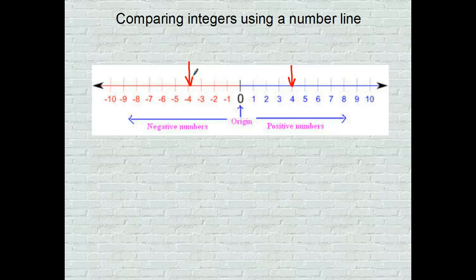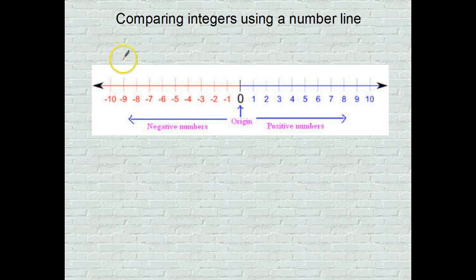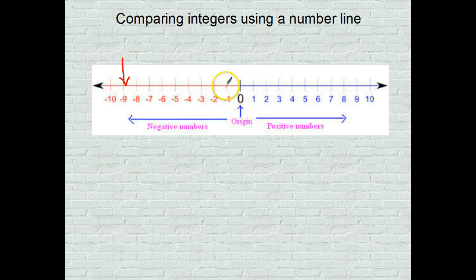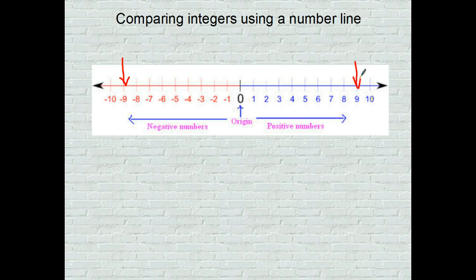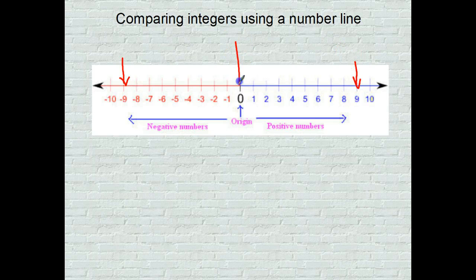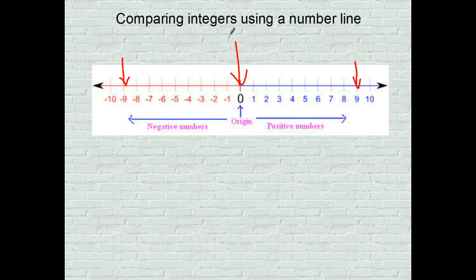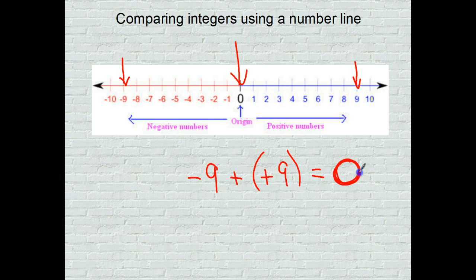So very quickly, tell me what the opposite of negative nine is. Well, here's negative nine. Count the units away from zero. One, two, three, four, five, six, seven, eight, nine. So positive nine is the opposite of negative nine. And if I were to put them together, where are we going to land? If I were to add those two up together, we're going to land right here at zero. So negative nine added to positive nine is equal to zero. And this is the main part of the standard today.